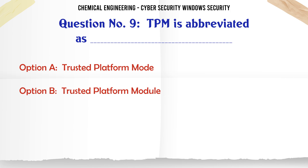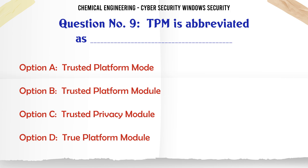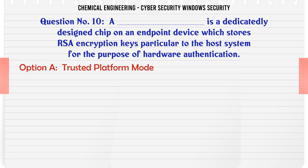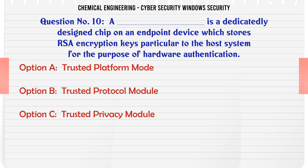TPM is abbreviated as: A. Trusted Platform Mode, B. Trusted Platform Module, C. Trusted Privacy Module, D. True Platform Module. The correct answer is Trusted Platform Module.